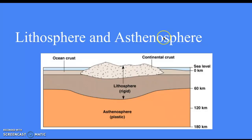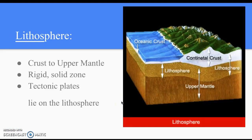Now we're going to go into more depth about the lithosphere and asthenosphere. The lithosphere is solid and rigid. It goes from the crust to the upper mantle — it's the rigid solid zone, and the tectonic plates lie on the lithosphere, as we said in the crust video.